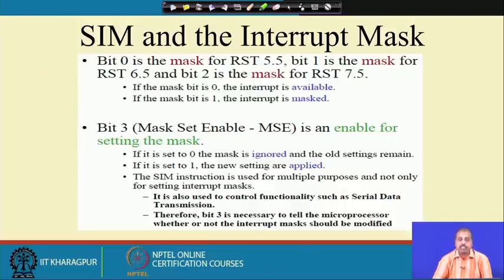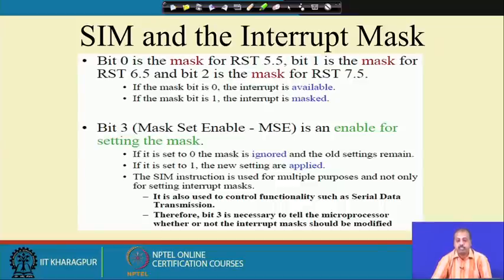The SIM instruction has multiple purposes: serial data transmission is also handled here. Bit number 3 is necessary to tell the microprocessor whether to set the interrupt mask or not, and similarly the SDE line is used to indicate whether serial data transmission is being performed.